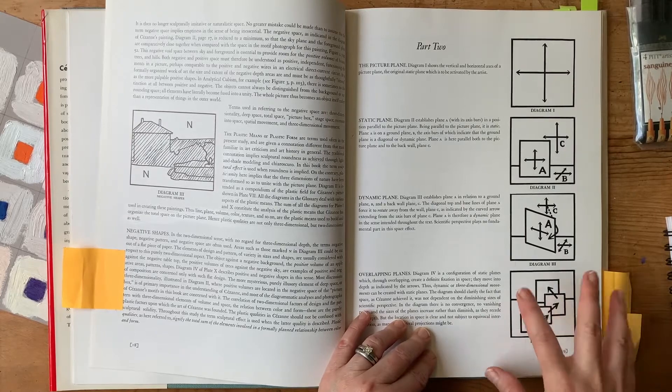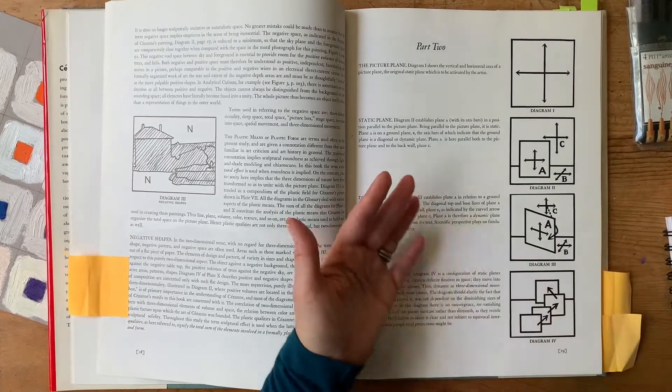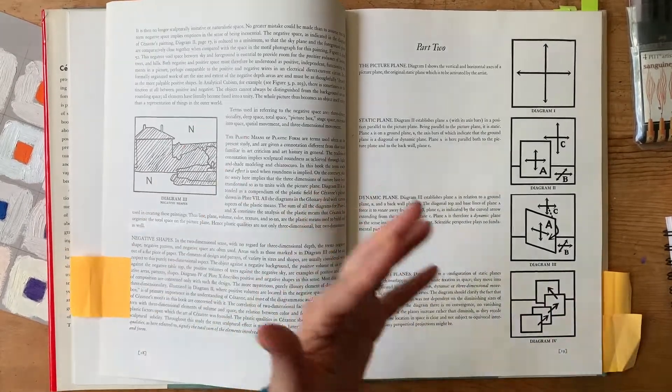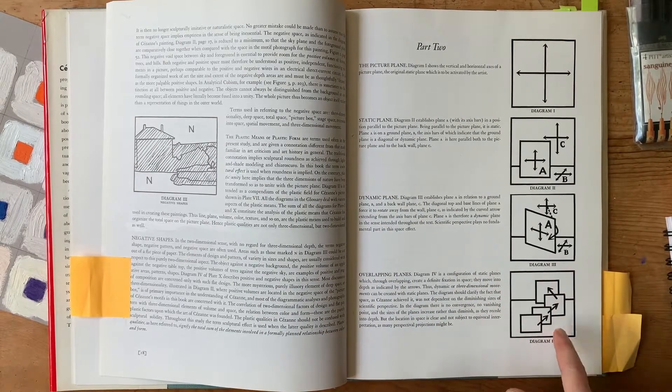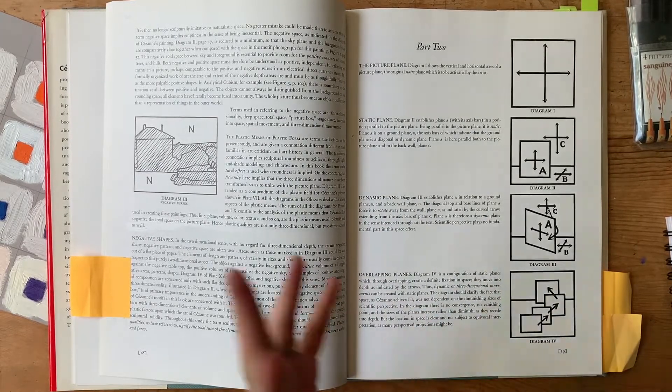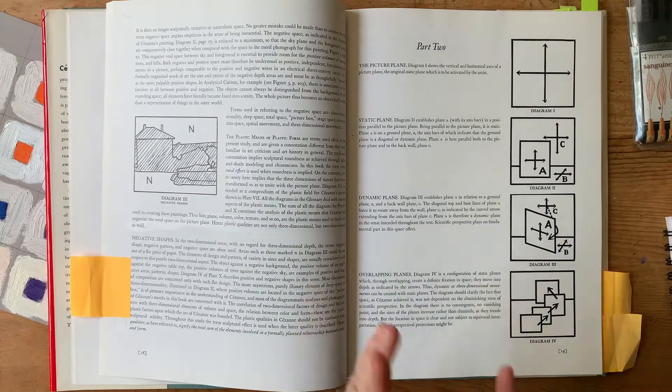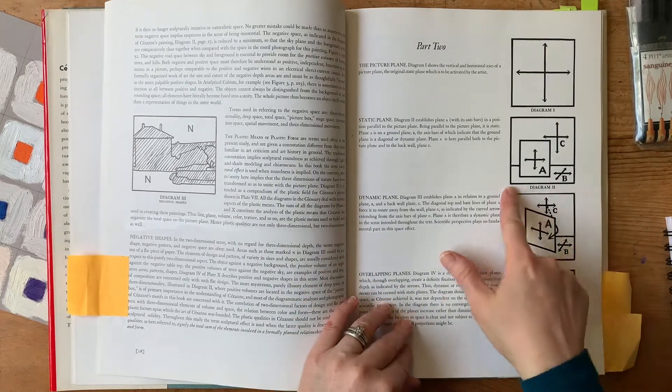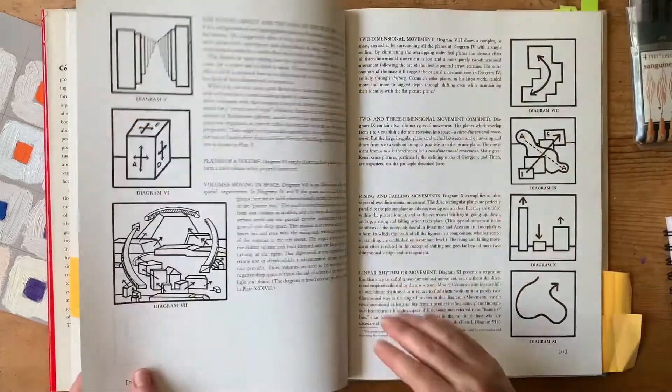It's still going to be flatter than this diagram, because you have a series of overlapping static planes. That creates visual depth as well and movement in your painting, but the picture space, the space of this diagram represents, is going to be a narrower visual space than what this diagram is.